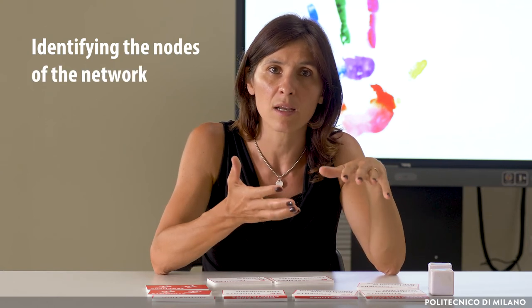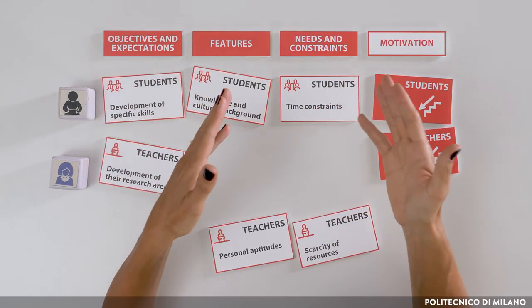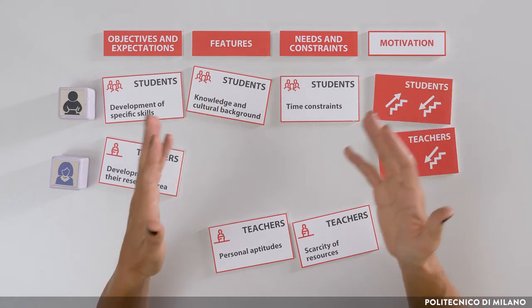Personal aptitudes of the teacher need to be carefully considered, as they cover a fundamental role in the teaching and learning experience. In conclusion, to create the Learning Innovation Network, we need to start from identifying the nodes of the network and describe them concisely in terms of objectives, expectations, features, constraints, needs, and motivating factors. Concisely describing the actors allows us to focus on the elements to be leveraged when designing and implementing the teaching and learning experience.